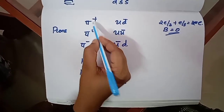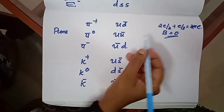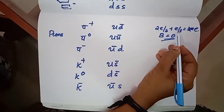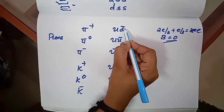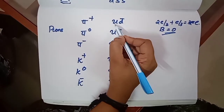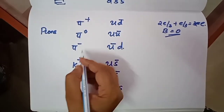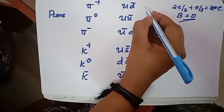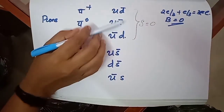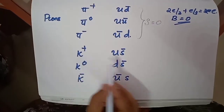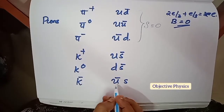Quarks can be combined with anti-quarks to form mesons. For pi plus (π+), the combination is u d̄: 2e/3 + e/3 = +e, and baryon number is 1/3 − 1/3 = 0. For pi zero (π0) it is uū, and for pi minus (π−) it is ūd. For k plus (K+) the combination is us̄, for k zero (K0) it is ds̄, and for k minus (K−) it is ūs. The strangeness number is zero for pions since no strange quark is present.